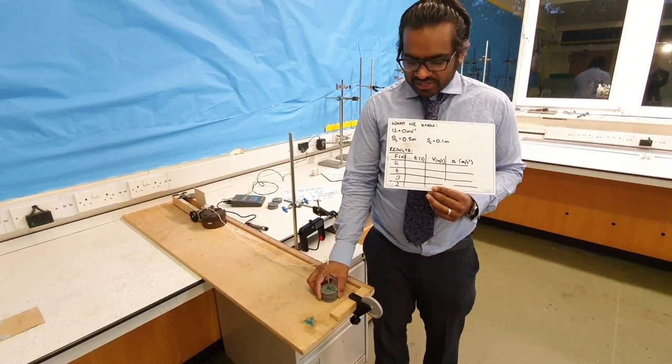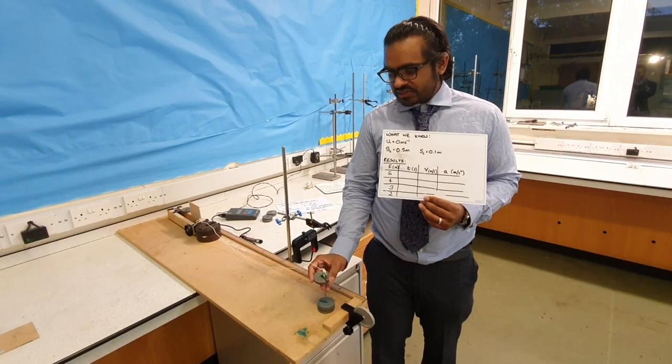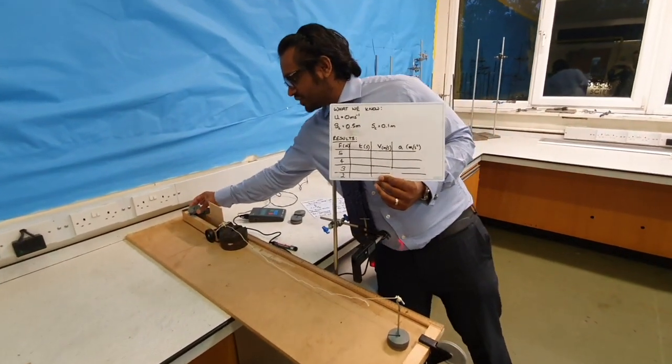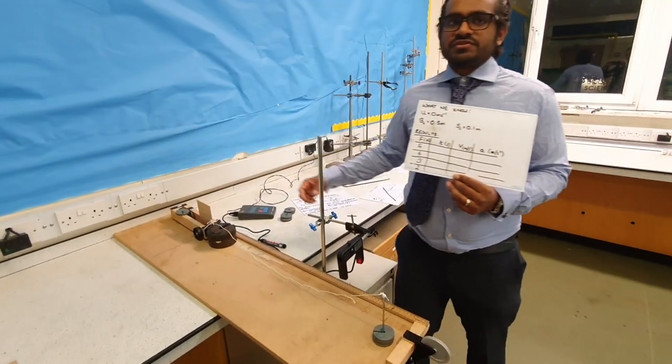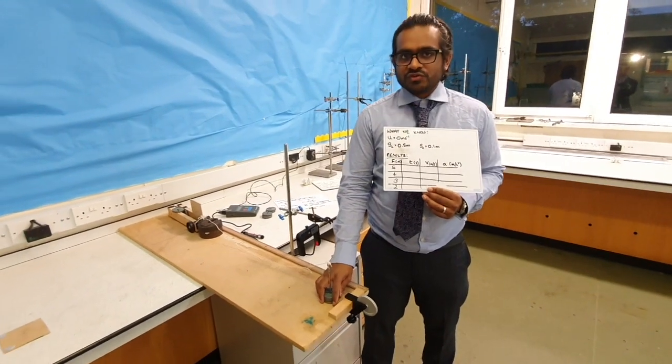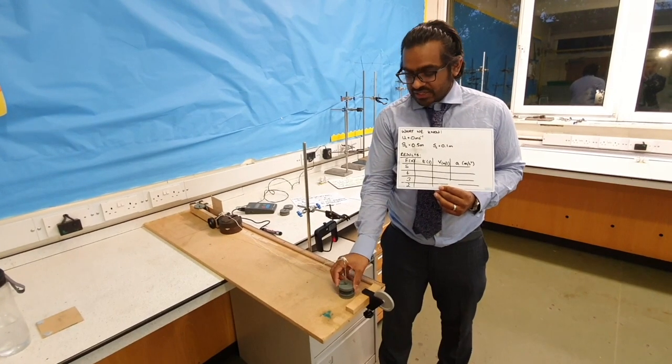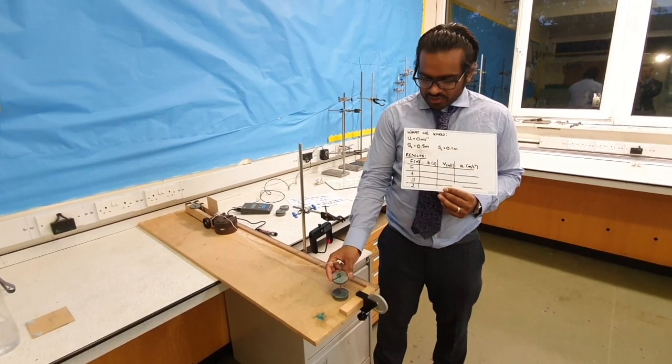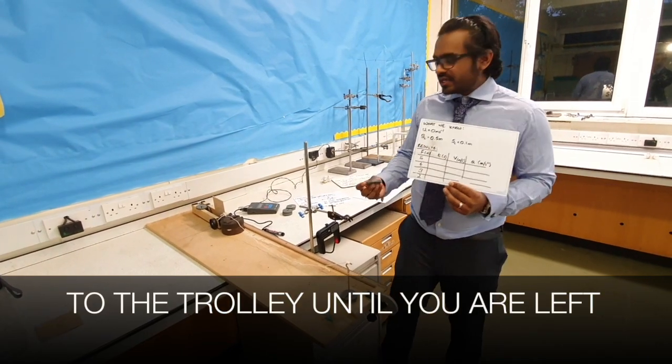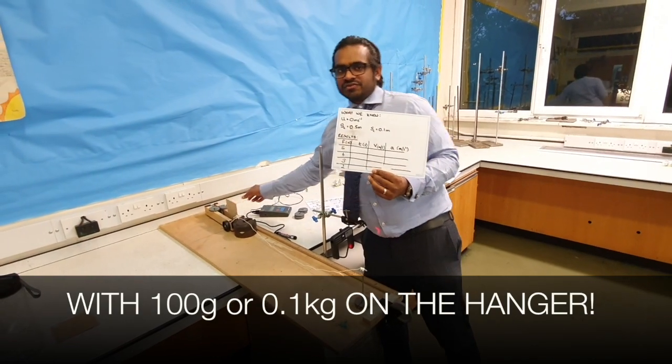Once we have calculated the acceleration for 4 newtons, we are again going to remove one of the masses from the force and place it onto the trolley to make sure that the mass of the system remains constant. So now we've got 3 newtons of force and then the other two masses on the trolley. Once we calculate the acceleration for the 3 newtons, we are going to remove one of the masses again and place it onto the trolley again to ensure that the mass remains constant.